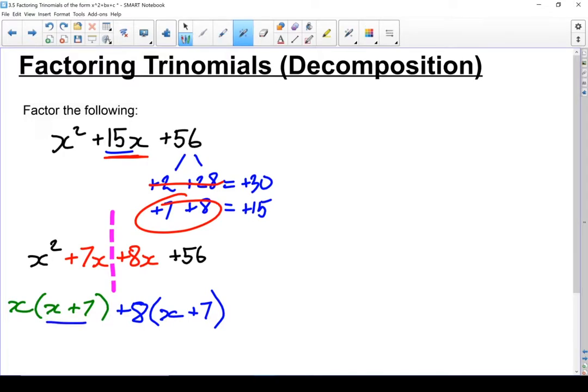Now stop right here. These two parts in brackets afterwards have to be exactly the same. If they're not, your decomposition method won't work. But in my case, because they are the same, I can factor that x plus 7 out of both pieces, and my second term is going to be these two leftover parts right here, x plus 8. And there is my factored form.